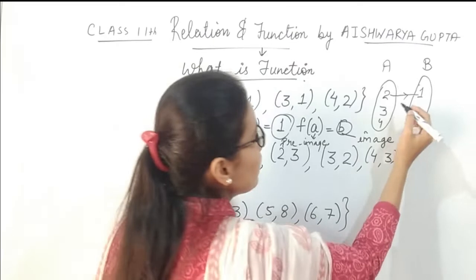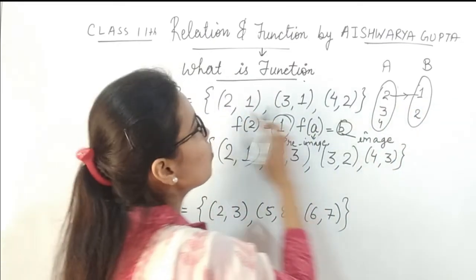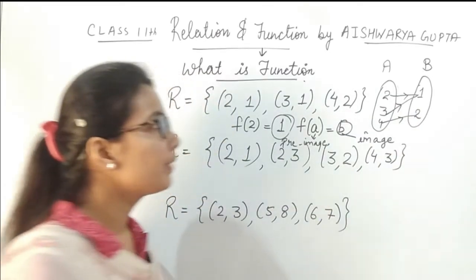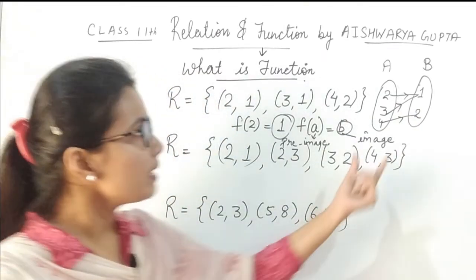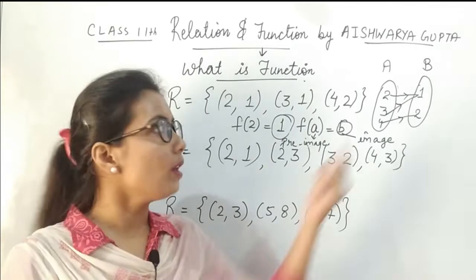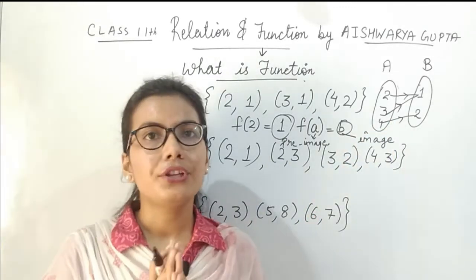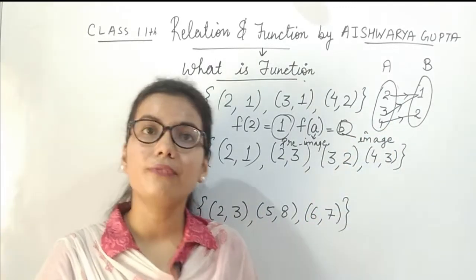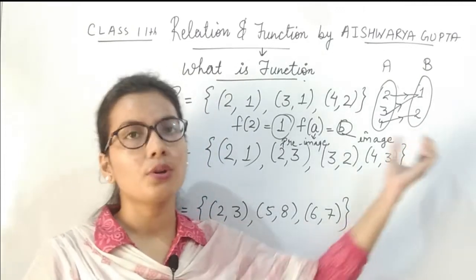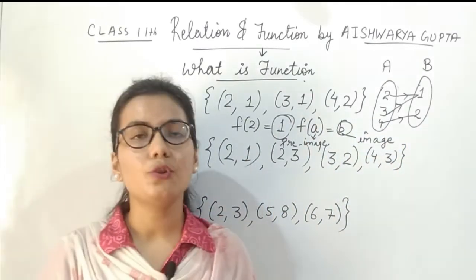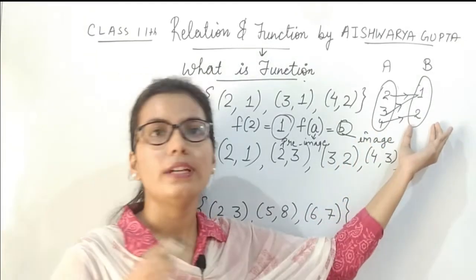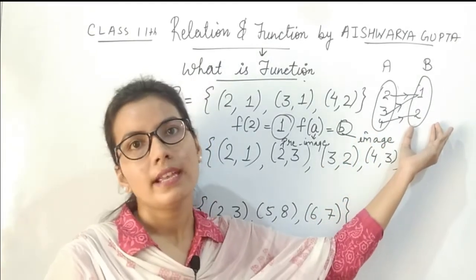Representing it as {(2,1), (3,1), (4,2)}: as you can see, all three elements 2, 3, 4 have a unique image and only one image in set B. Therefore, this relation is said to be a function, as every element has one and only one image in set B.